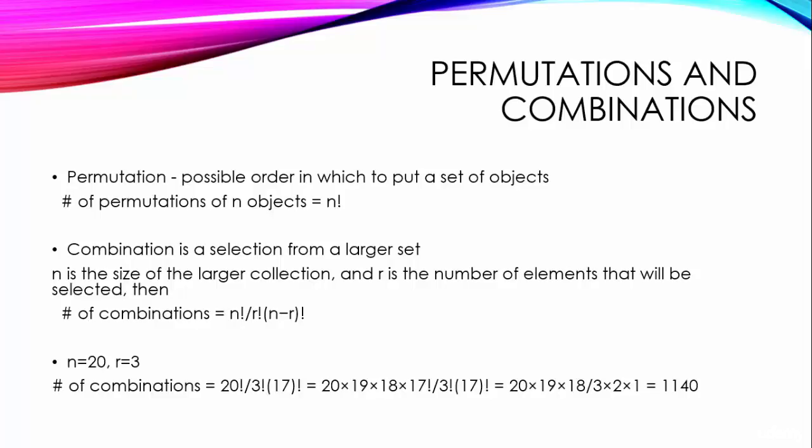This formula is scary looking, but really not bad at all. If n is the size of the larger collection and r is the number of elements that will be selected, then the number of combinations is given by n factorial by r factorial into n minus r factorial.